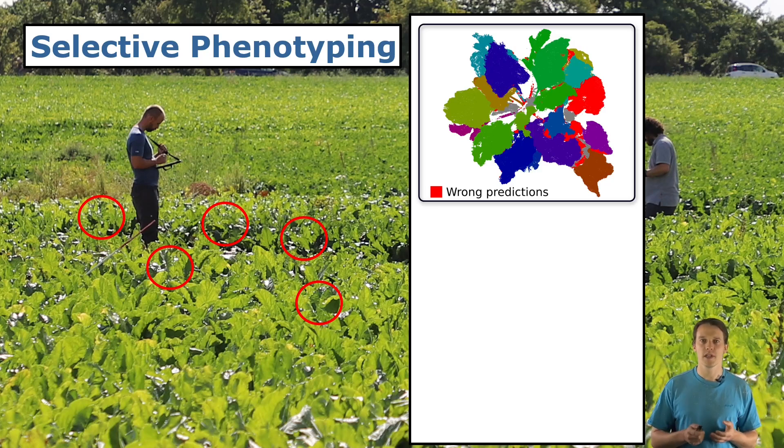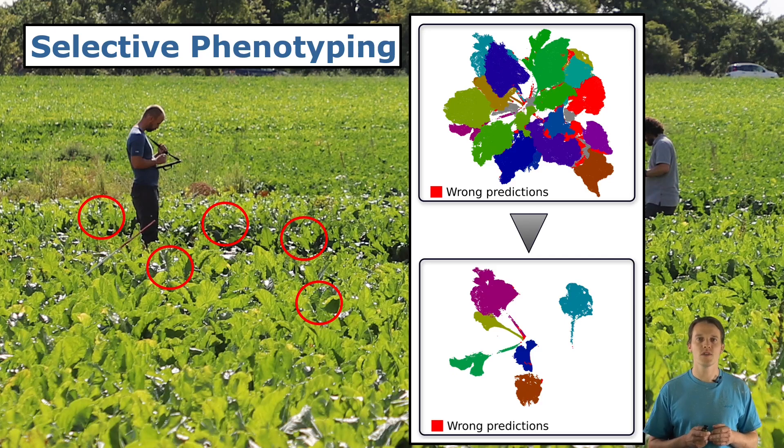If only we were able to tell the bad predictions apart from the good ones, we could drop them and have a subset of nicely segmented leaves which are perfectly suited for the trait extraction.